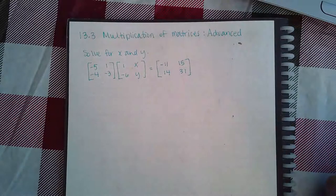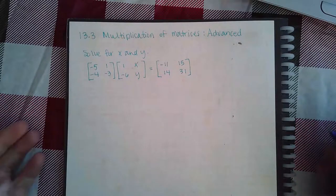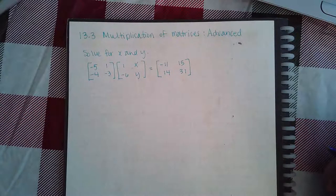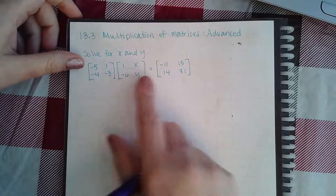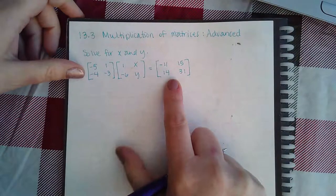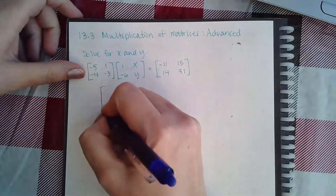Okay, here we have 13.3 multiplication of matrices advanced. It says solve for x and y, and if you multiply these two matrices you should end up with these results. So let's go ahead and multiply these two matrices.